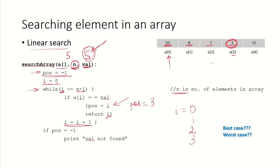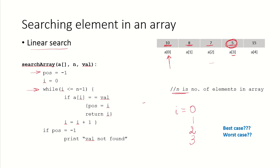And we have finished the search. Let me take another example where I am looking for a value 25. Again, n is equal to 5, which is the number of elements. Position is equal to minus 1.